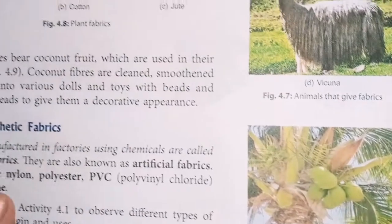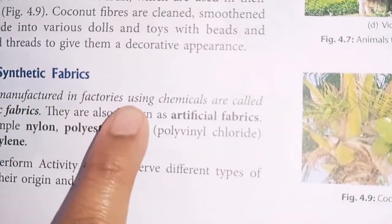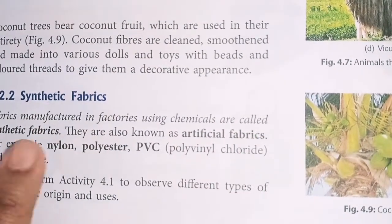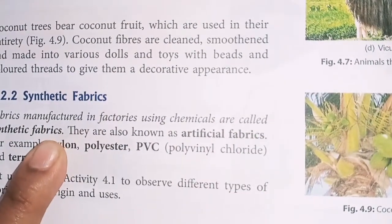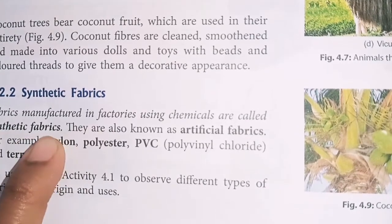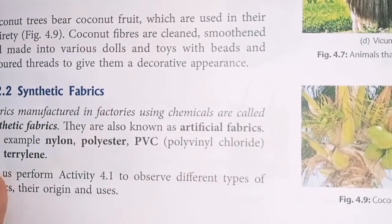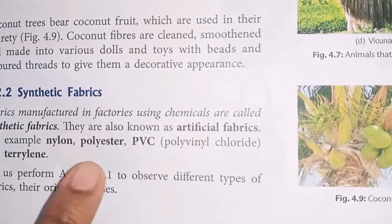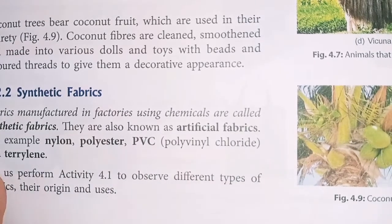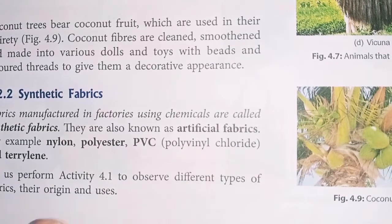Next is synthetic fibers. The fabrics manufactured in factories using chemicals are called synthetic fibers. They are also known as artificial fabrics. Examples include nylon, polyester, PVC — which means polyvinyl chloride — and terrylene. We will study these in more detail in higher classes, in 8th class.